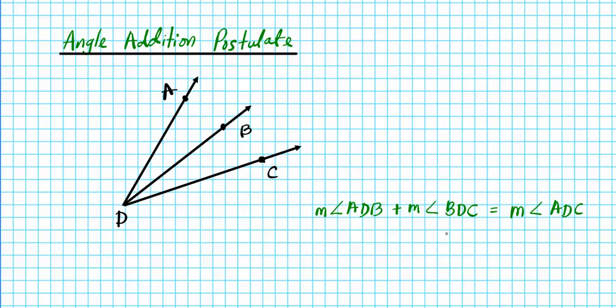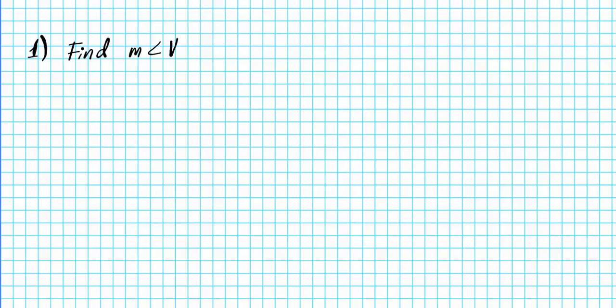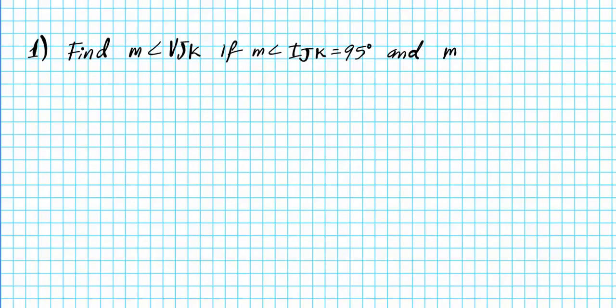Alright, let's consider question number one. We are to find the measure of angle VJK, if the measure of angle IJK is equal to 95 degrees and the measure of angle IJV is equal to 42 degrees.